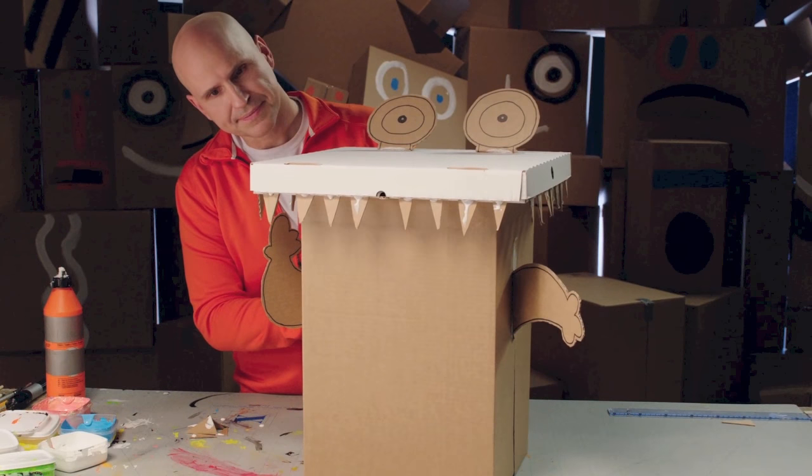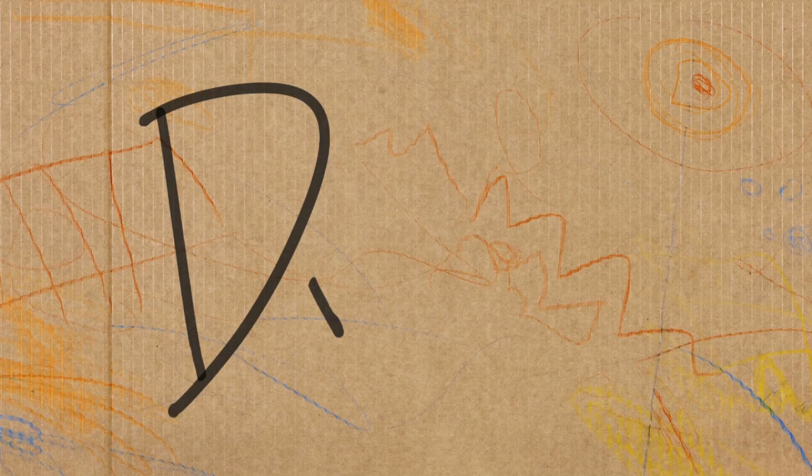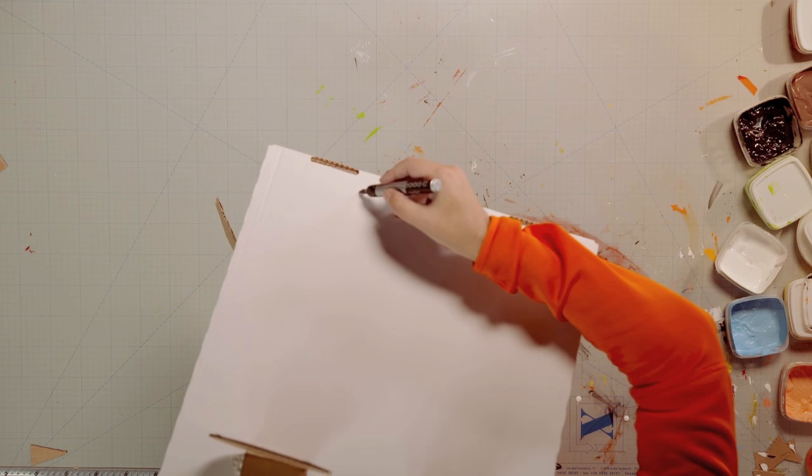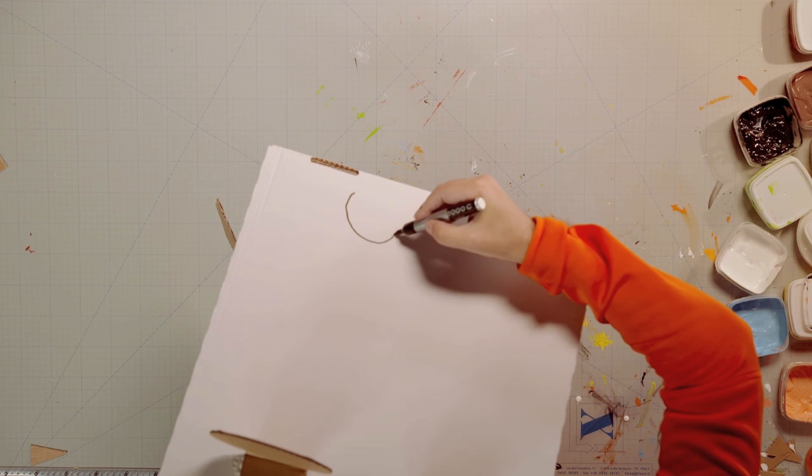Now all the pieces are in place. Now we can draw up all the details. Let's start by drawing some nostrils on the top, opposite the eyes.